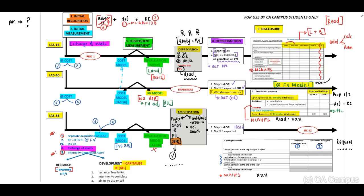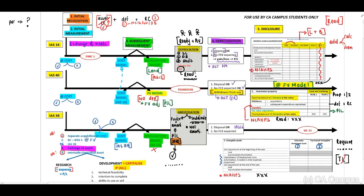When looking at your tutorial letters and self-assessment questions, you will identify that they do not actually include the narrative information — except normally where they want you to include an IAS 8 change in estimate. Therefore as a general assumption, you do not have to include narrative information, but please read the question to confirm whether they want you to do this.